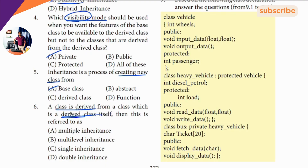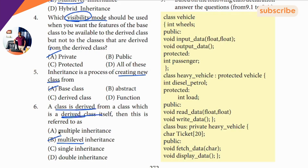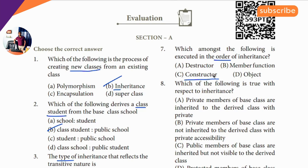Multiple times a class is derived — that is multi-level inheritance. The answer is multi-level. Seventh question clue: order of constructors. The answer is constructor order.